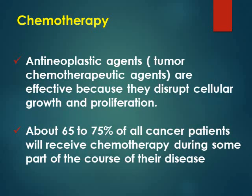Anti-neoplastic agents or tumor chemotherapeutic agents are effective because they disrupt cellular growth and proliferation. Tumor cells are more rapidly dividing than normal cells, so they are more affected by the chemotherapeutic agents. In normal tissue, the more rapidly dividing cells will get more side effects from chemotherapy than slow-dividing cells. Manifestations are seen more in skin tissues and alimentary canal tissue, which are more rapidly dividing.